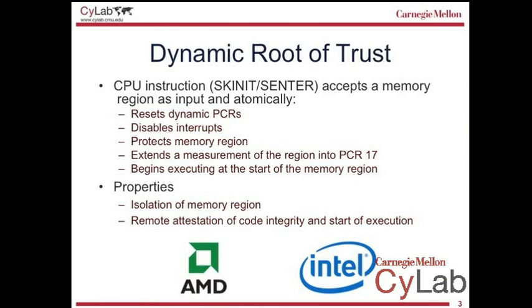An interesting mechanism that can enable these properties is something called dynamic root of trust. This has been mentioned a few times this week, and now we're finally going to introduce it. It's been added to hardware platforms from AMD and Intel over the last few years, and it's realized as a CPU instruction — which validates the fact that these are complex instruction set computers. It is intended to create a secure execution environment and enable the bootstrapping of a trustworthy execution environment.